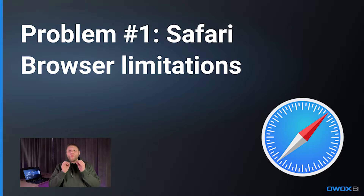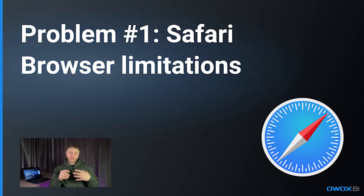One of the primary problems behind pixel-based tracking is the Safari web browser, equipped with its own Intelligent Tracking Prevention, or ITP, feature. As of the beginning of 2024, Apple Safari holds over 22% share of the global browser market, so you can't just skip it.